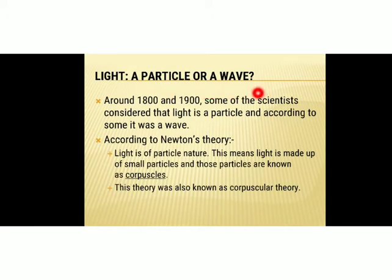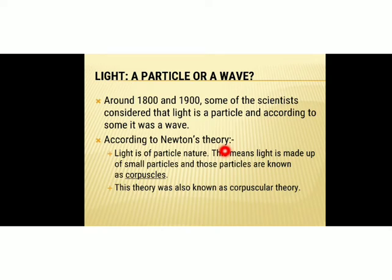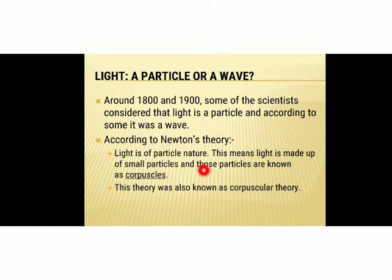Light — is it a particle or a wave? Around 1800 and 1900, some scientists considered that light is a particle, and according to some it was a wave. According to Newton's theory, light is of a particle nature — light is made up of small particles known as corpuscles. This theory was known as the corpuscular theory. So according to Newton, light has a particle nature, and he assumed light is made up of small particles called corpuscles. Hence this theory is known as corpuscular theory.